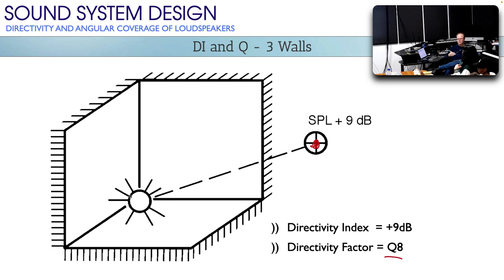It's not that subwoofers don't comb filter at all — they can comb filter. They just don't comb filter against themselves when they're only about 6 inches away from a wall.